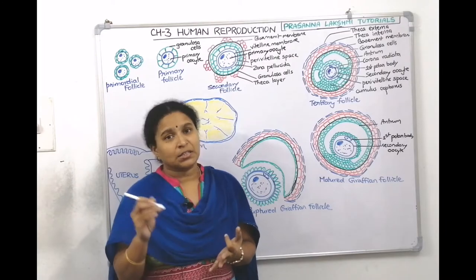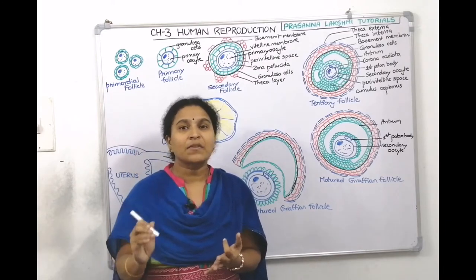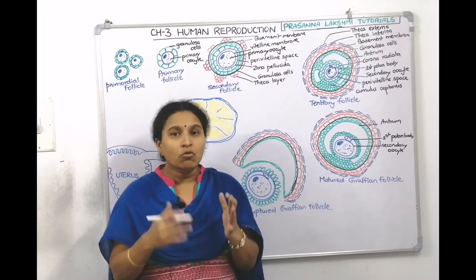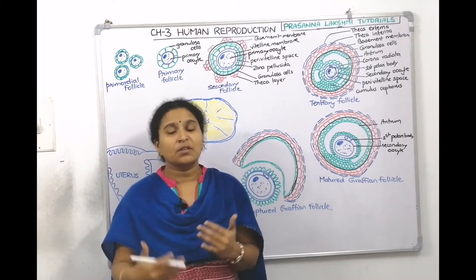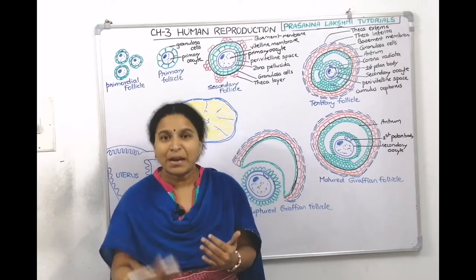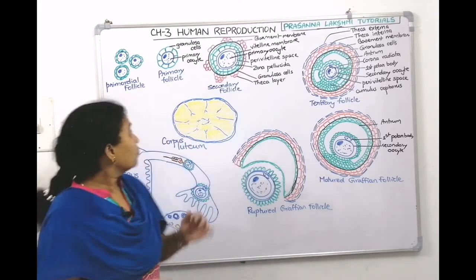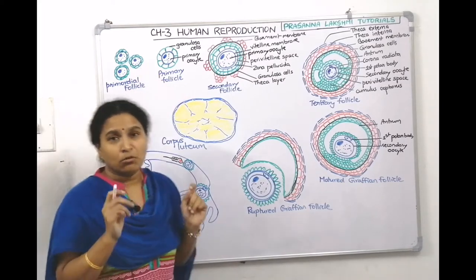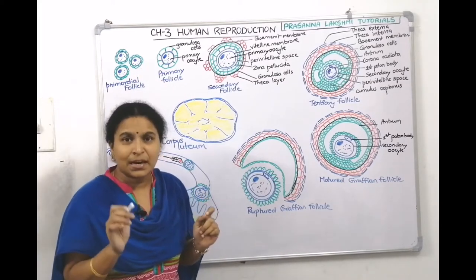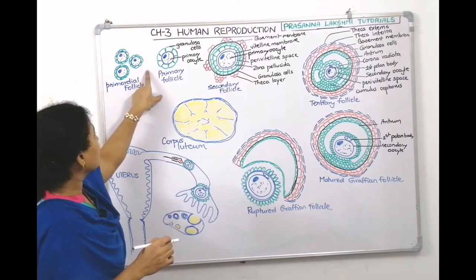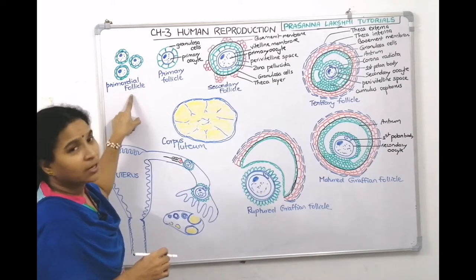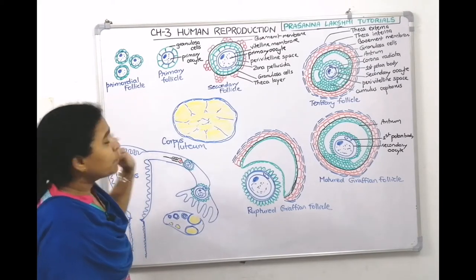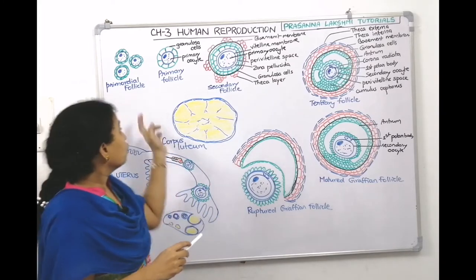From the fourth week till 20 weeks, multiplication happens — the oogonia undergo mitotic division and produce many oogonia. These oogonia are surrounded by spindle-shaped granulosa cells, and such follicles are called primordial follicles. Here we can see a primordial follicle.